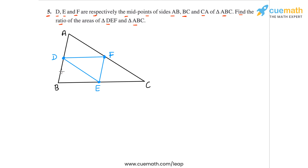If we look at the sides of triangle DEF, using the midpoint theorem, DE will be half of side CA, EF will be half of AB, and FD will be half of BC. So if you look at the ratio of corresponding sides of the small triangle DEF and the big triangle ABC, the ratio of corresponding sides will be the same. We can apply SSS similarity and say the two triangles are similar. From there we can find the ratio of areas easily, because for any two similar triangles, the ratio of areas is the square of the ratio of corresponding sides.